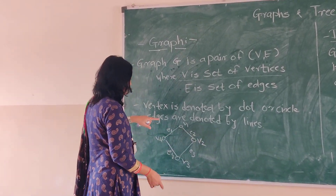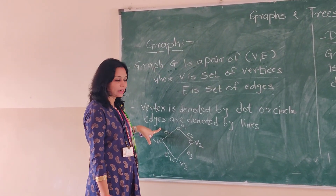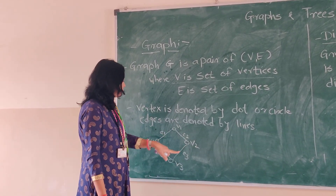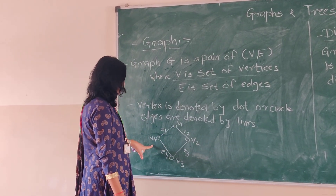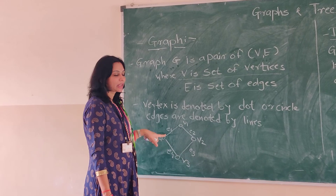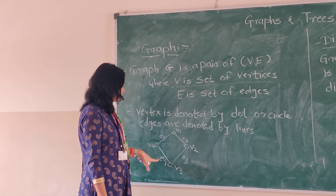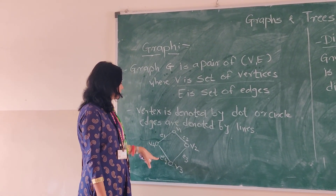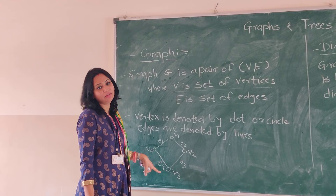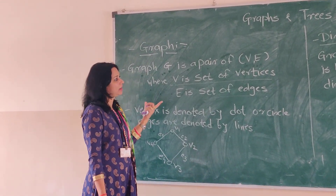For example, here we have a particular graph where 4 vertices are present, denoted by circles, and they are connected by lines. So that is a basic graph.